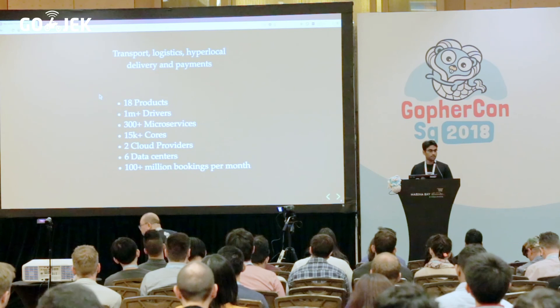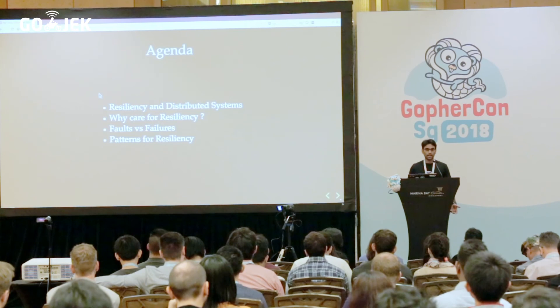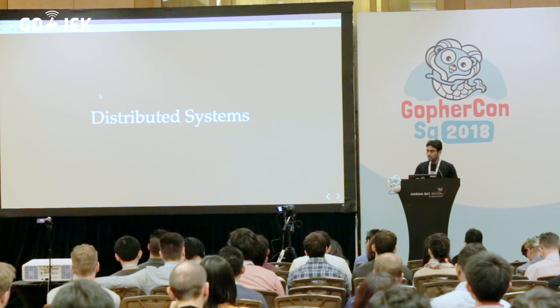Gojek is a transport, logistics, hyperlocal delivery and maintenance company. It is an international sector and this is the scale at which we operate. We have more than 300 plus microservices currently, and among them 100 plus are written in Go. This will be the agenda: a quick basics of resiliency in distributed systems, why do we care, what are fault sources and failures, and what are the patterns we live by.